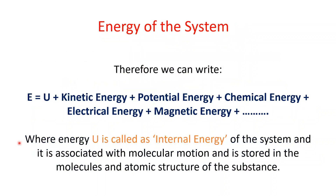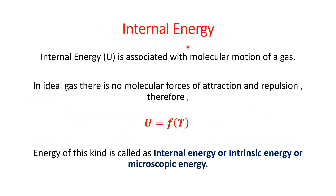Therefore, the energy of the system is: E = U + kinetic energy + potential energy + chemical, electrical, and magnetic energy. From kinetic to magnetic energy, these are macroscopic forms of energy; U is the microscopic form of energy, called the internal energy of the system. This internal energy U is associated with the molecular motion of the gas or substance, and for an ideal gas, U is a function of its absolute temperature.